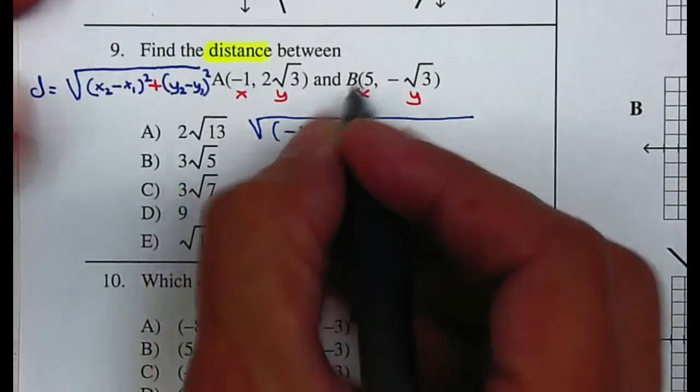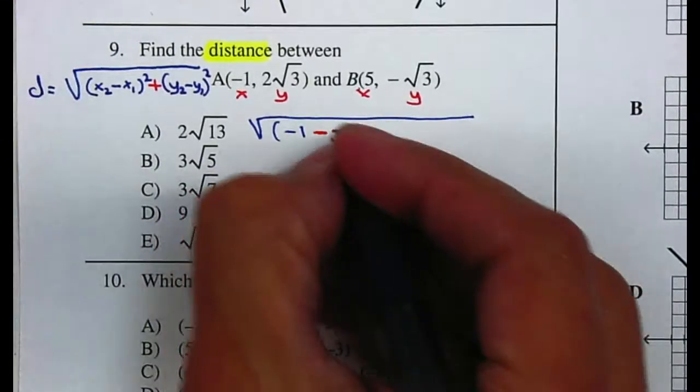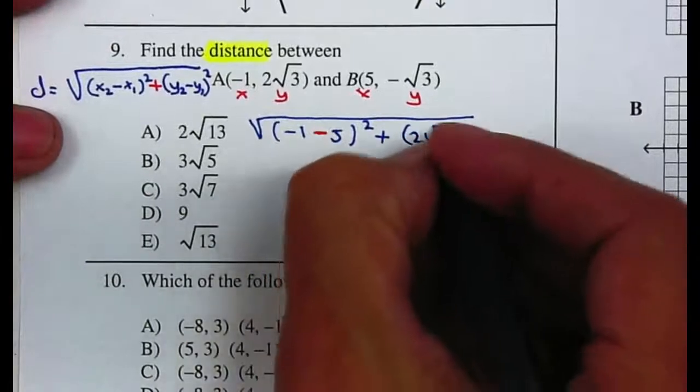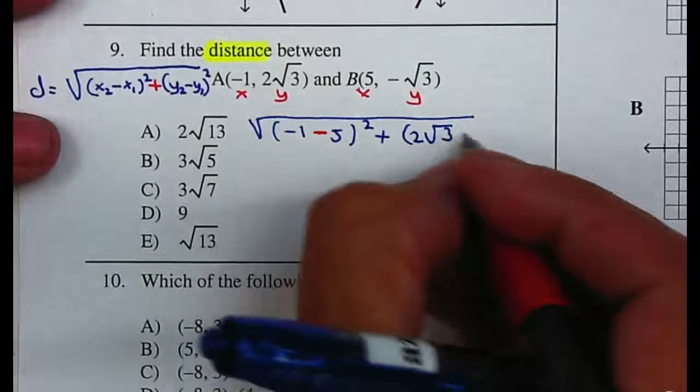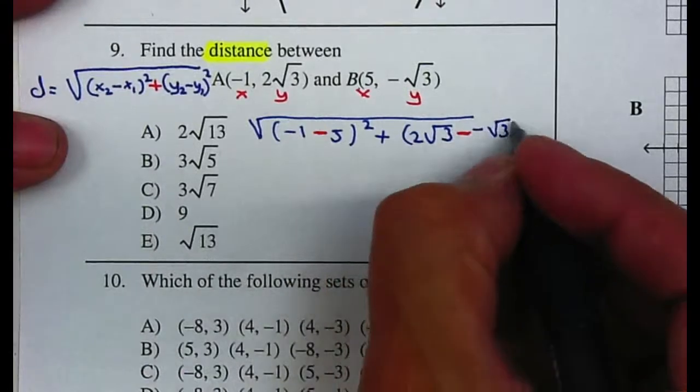negative one minus 5 squared, plus now your y's will be 2√3 minus negative √3, squared.